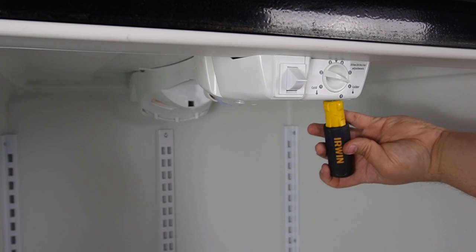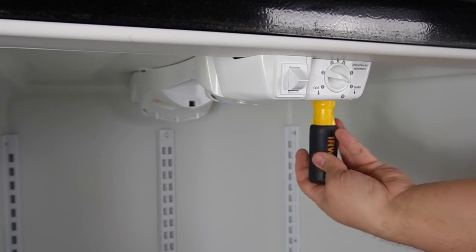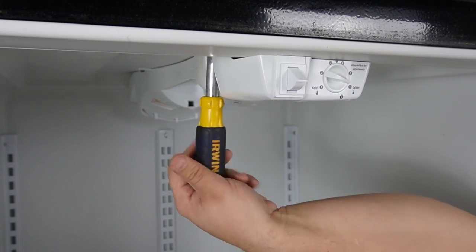Next, we want to remove the cold control housing. You will need a quarter inch hex head screwdriver to remove these screws. On the front screws, a thick screwdriver like mine barely fits. I was able to remove the screws, however.